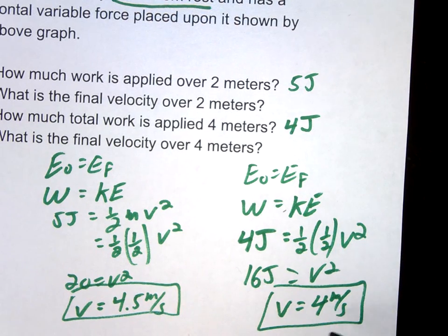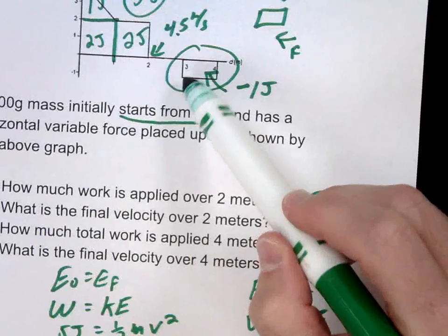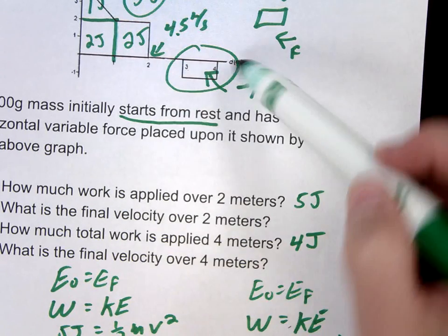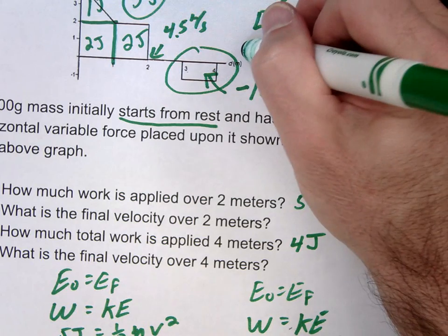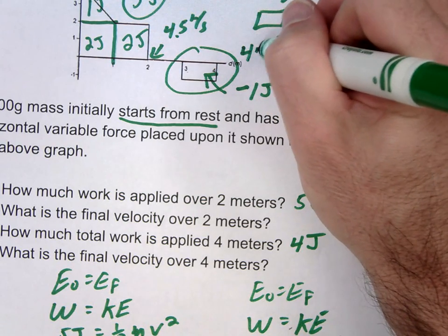So you always want to make sure the answer makes conceptual sense. Notice after 2 meters, we'd accelerate it up to 4.5. Then we're going to have an opposing force in the opposite direction. That's going to slow us down to 4 meters per second.